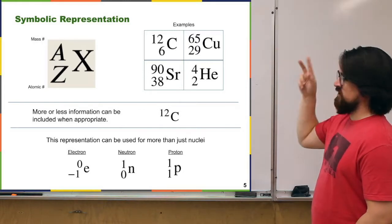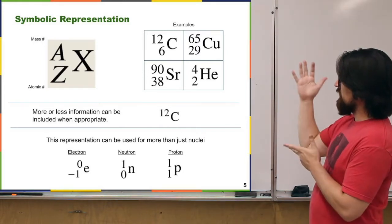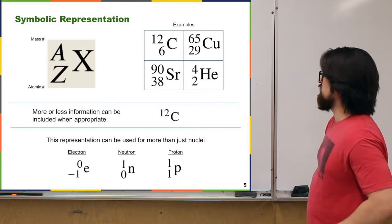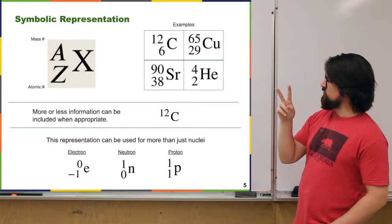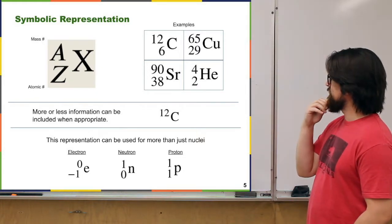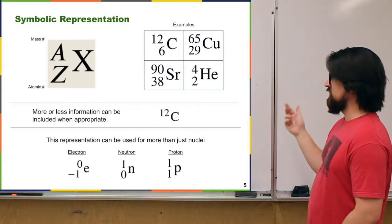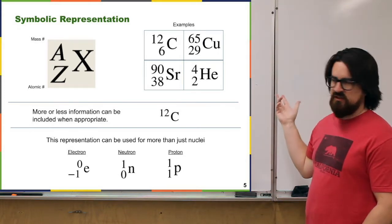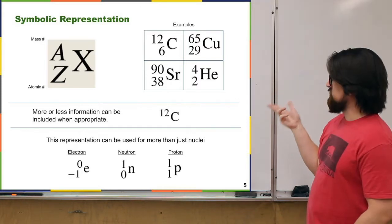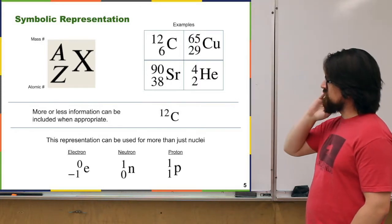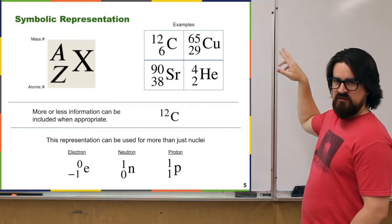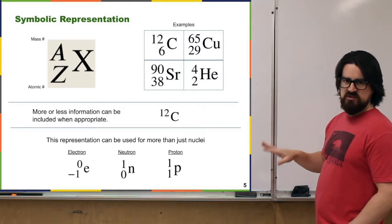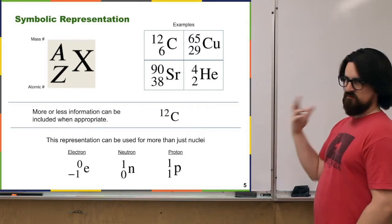Some examples: carbon has Z equals 6 — six protons — and one isotope is carbon-12 with six neutrons. Copper has Z equals 29, helium is the standard with two protons and two neutrons, and strontium is another example. Sometimes we don't write all the notation all the time — like you'll just see carbon-12 — partly because Z and the element name say the same thing. This notation can also indicate things beyond just nuclei, like nucleons themselves, or electrons, or even positrons.